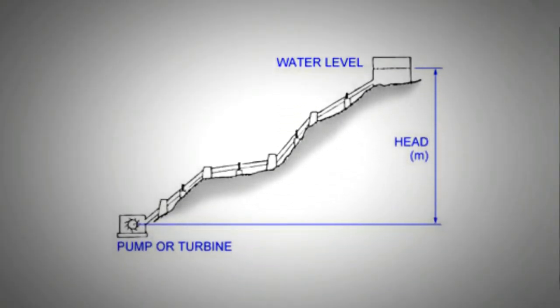The head of water is the measure of hydrostatic energy of water. It is simply the height of water above a certain point. For hydropower, it is the measure of the height that will be available above the turbine.